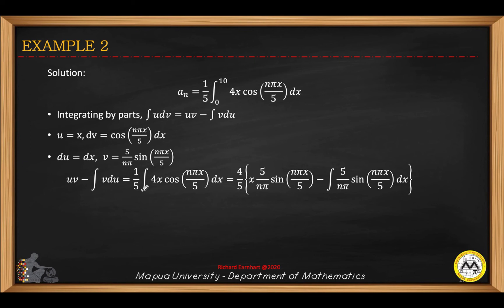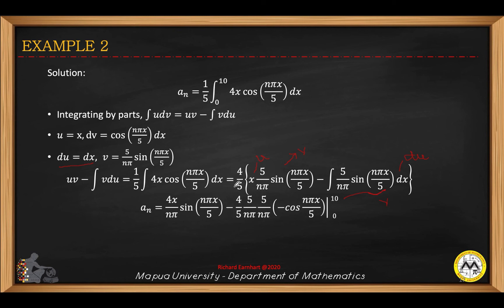Substituting, we have 1 over 5 times the integral of 4x cosine(nπx/5). We can factor out 4 over 5. Then applying uv minus integral of v du: u is x, v is 5 over nπ sin(nπx/5), and du is dx. For a sub n, we now substitute the limits from 0 to 10.